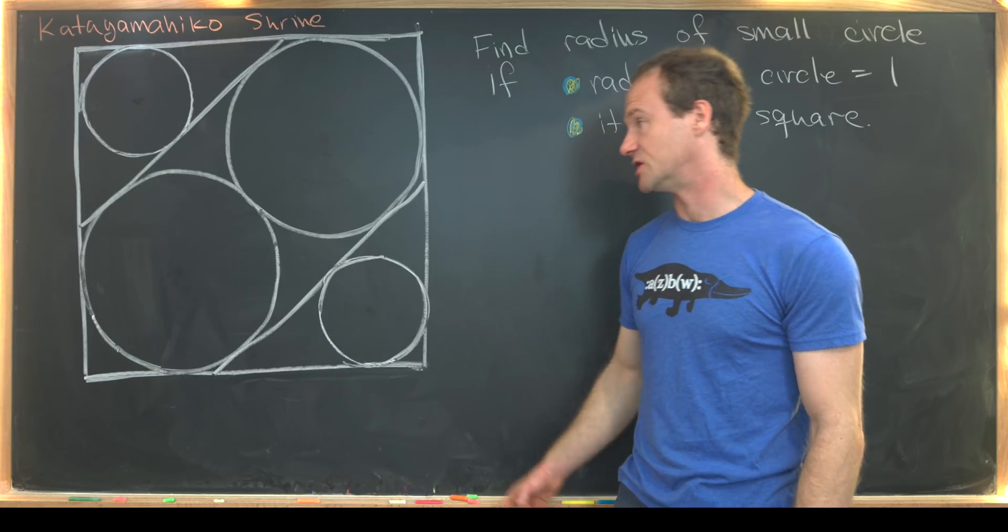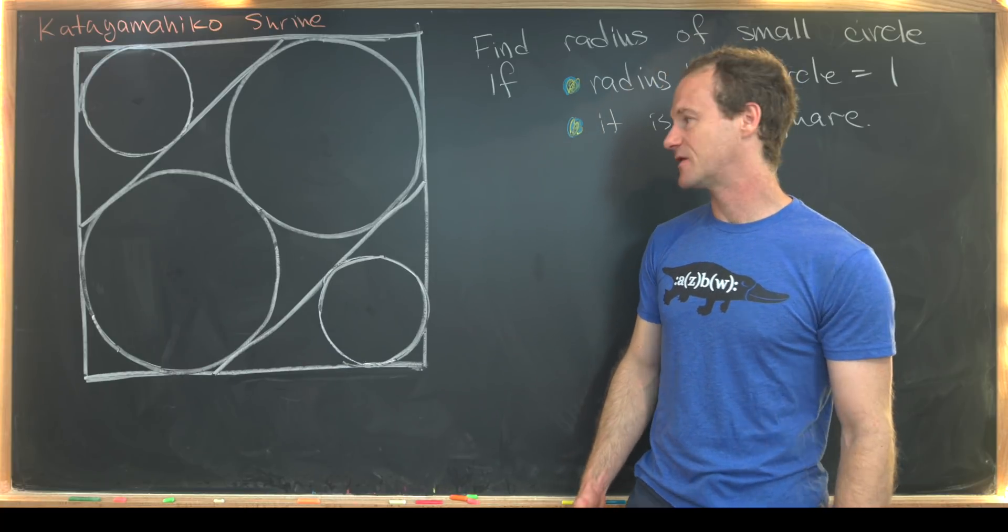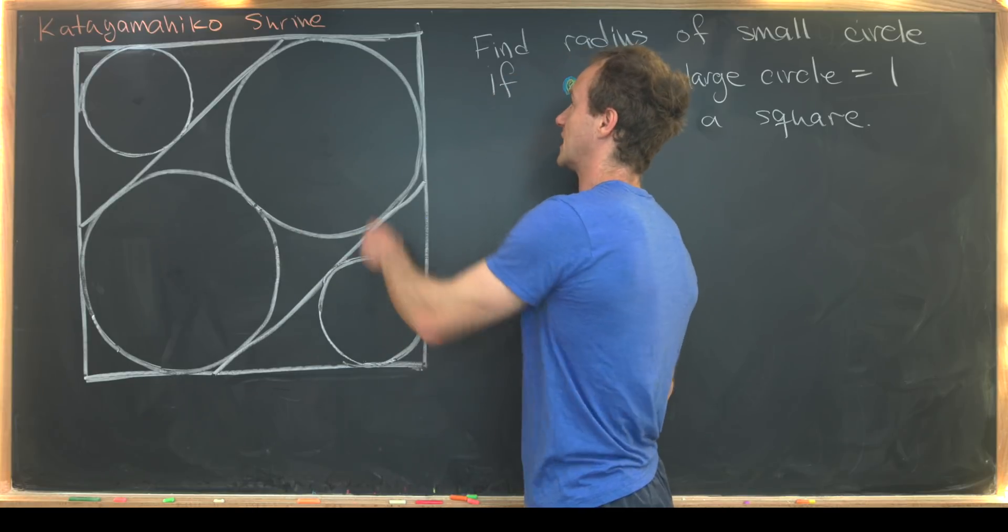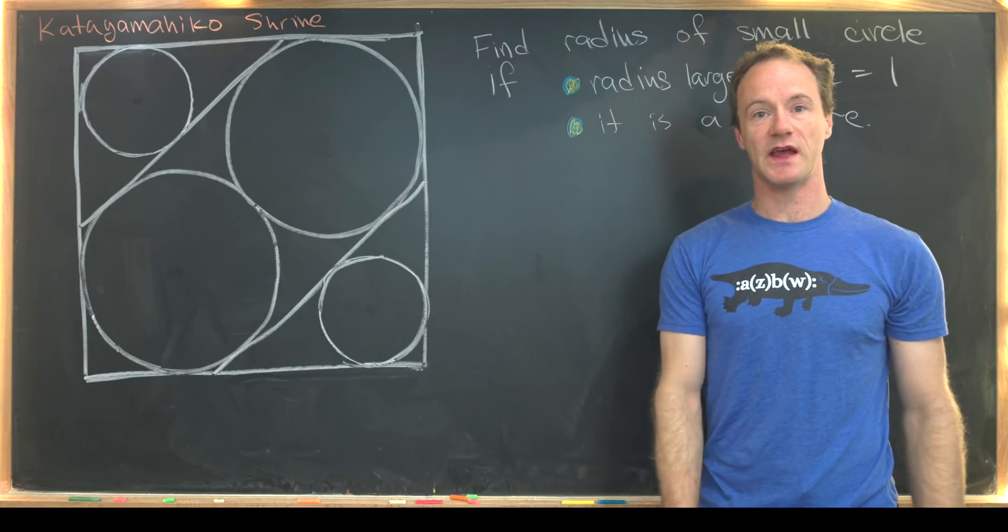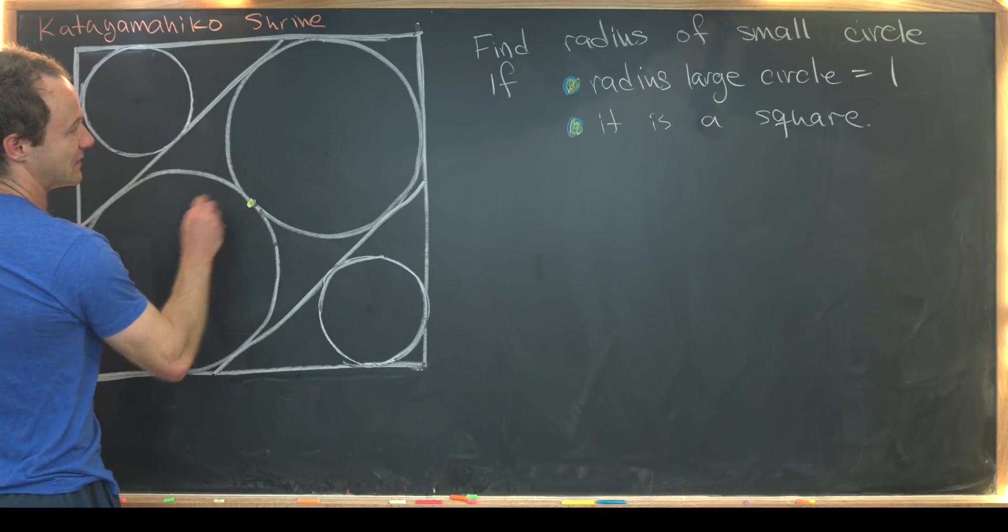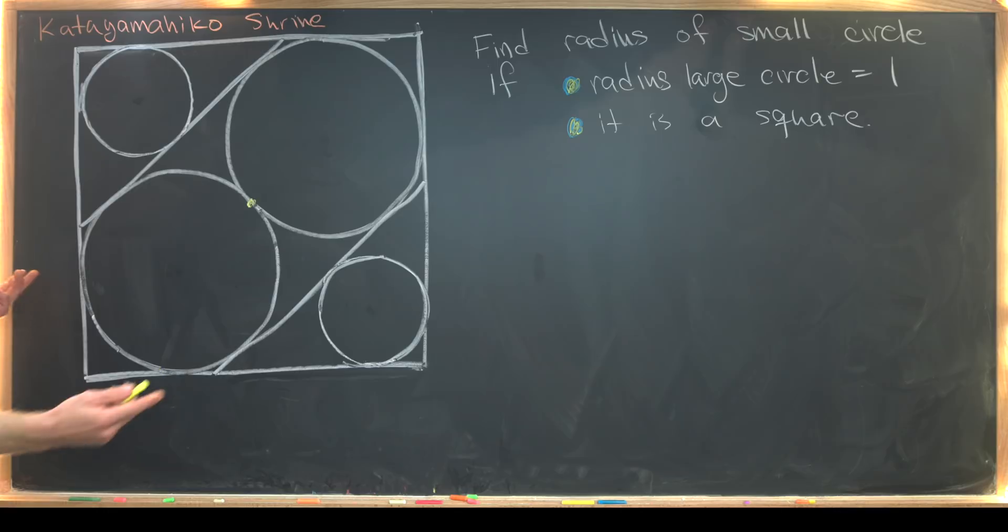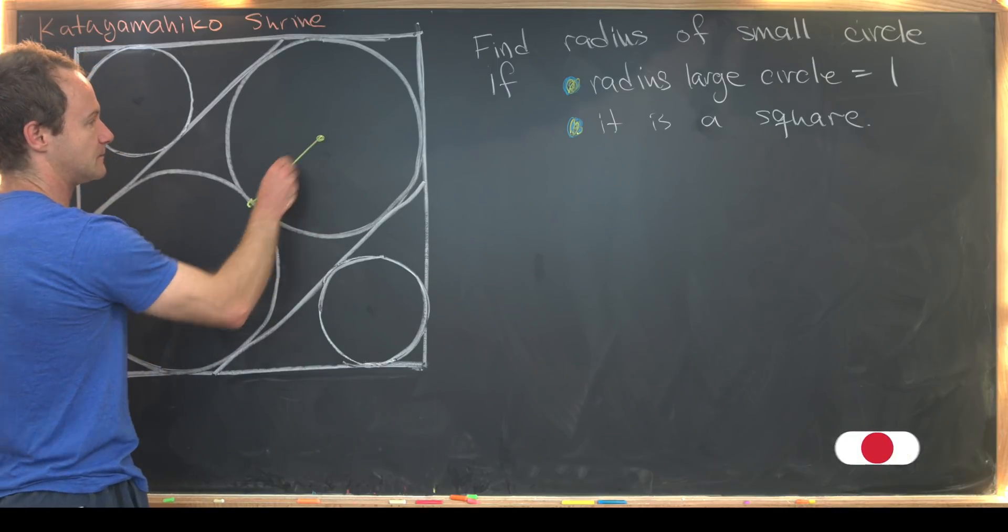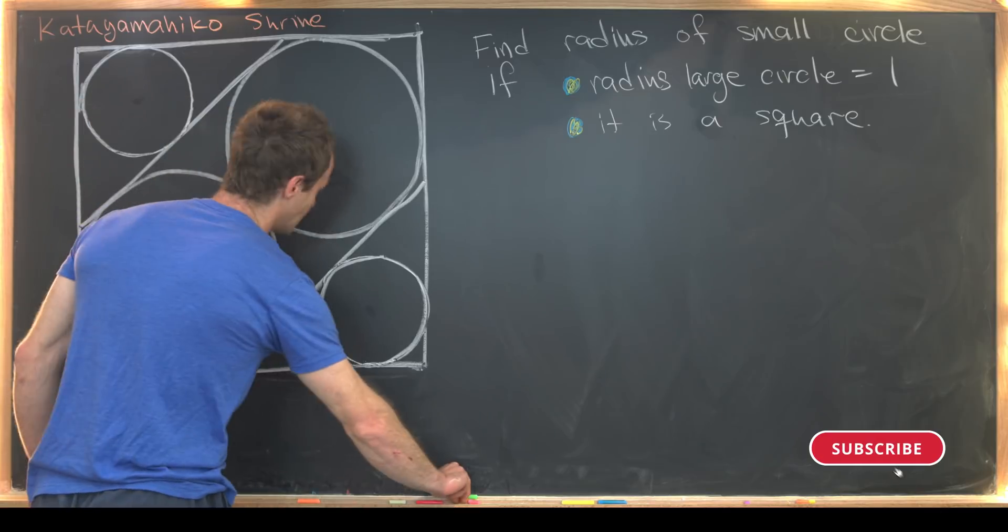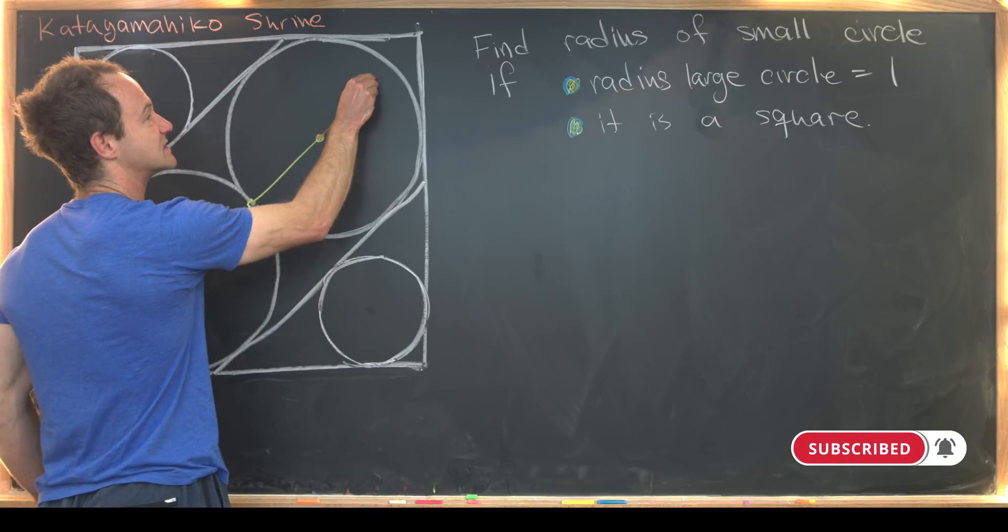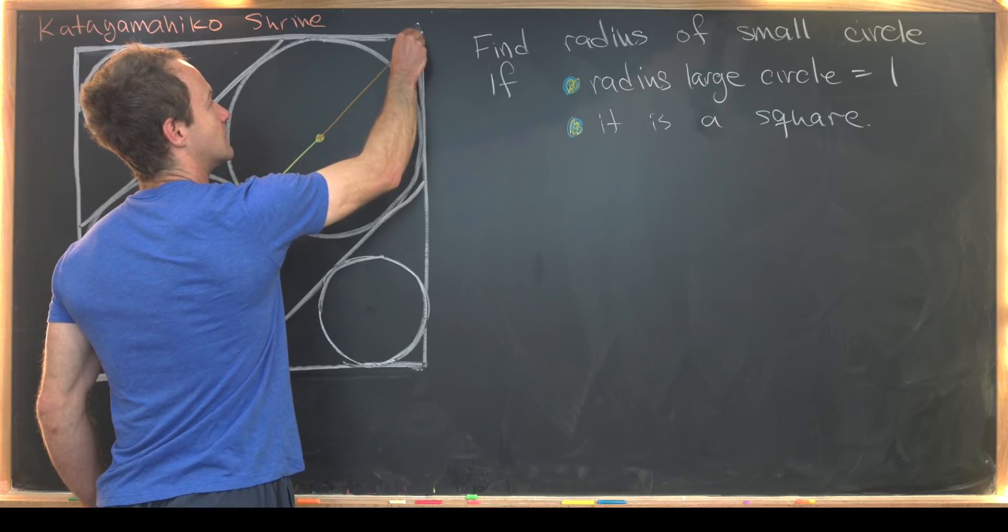Our strategy will be to take the measurement from the center of this square to the vertex of this square two different ways. So we'll first measure it like this. We'll measure from here, which is the center of the square, to the center of this circle, and then we'll measure from the center of this circle up to this vertex here.